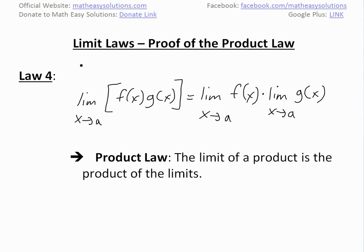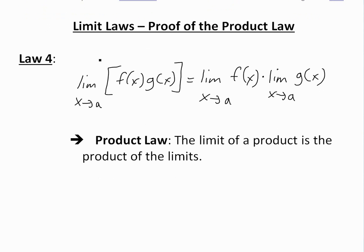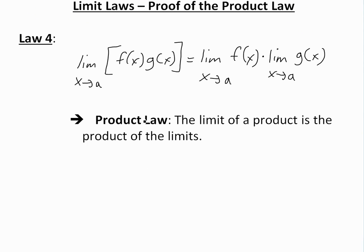You can see the video link below in the description. Basically, this law states the limit as x approaches a of f(x) times g(x) equals the limit of f(x) as x approaches a, times the limit of g(x) as x approaches a. This is what's called the product law — the limit of a product is the product of the limits.